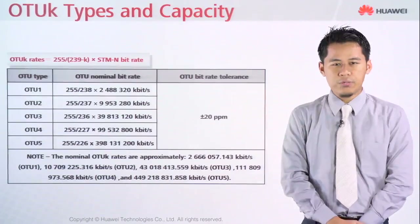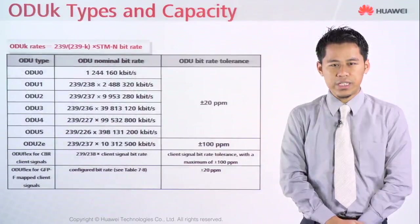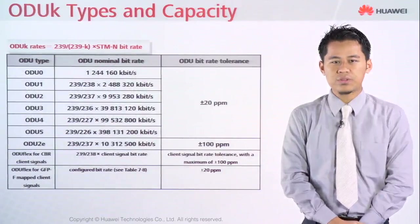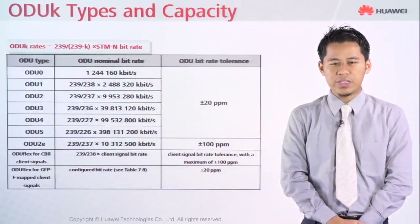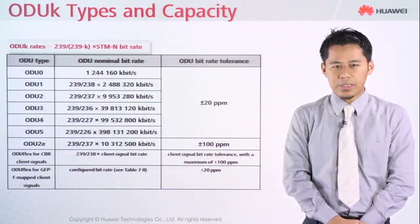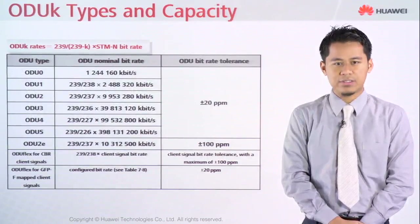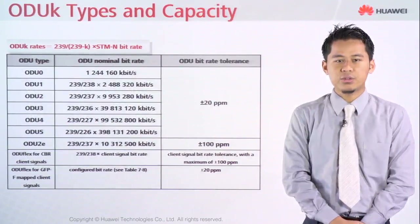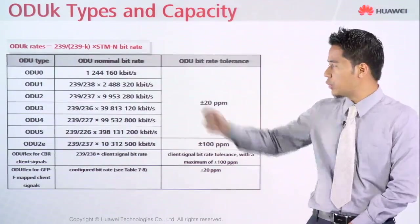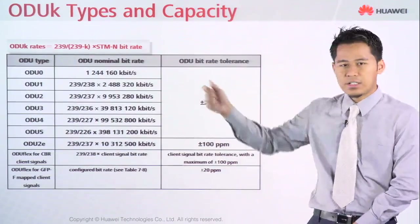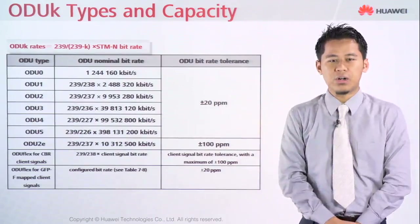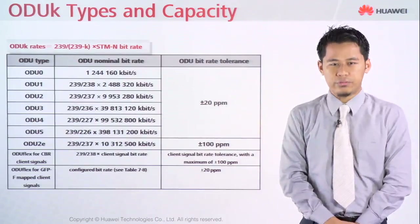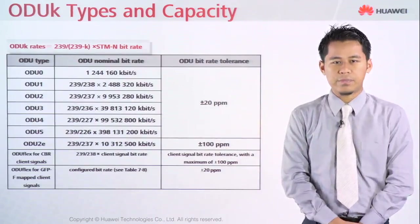Following that is the ODUk types and capacity, which is for the ODUk level. As you can see, the formula will be a little bit different. We are going to calculate from ODU0 until ODU5 as well.